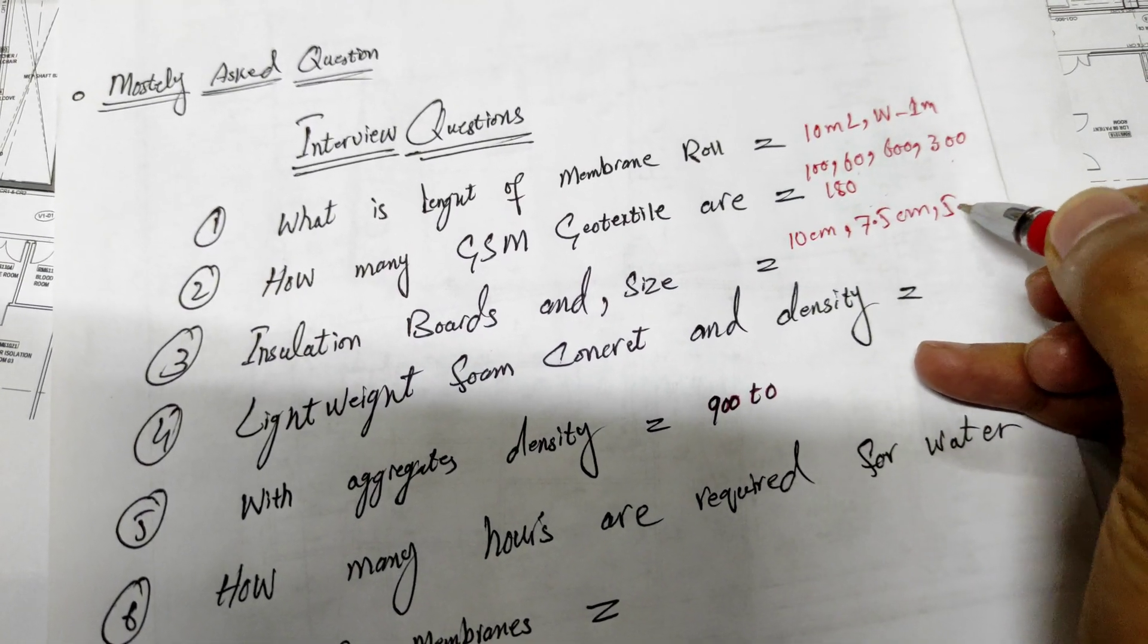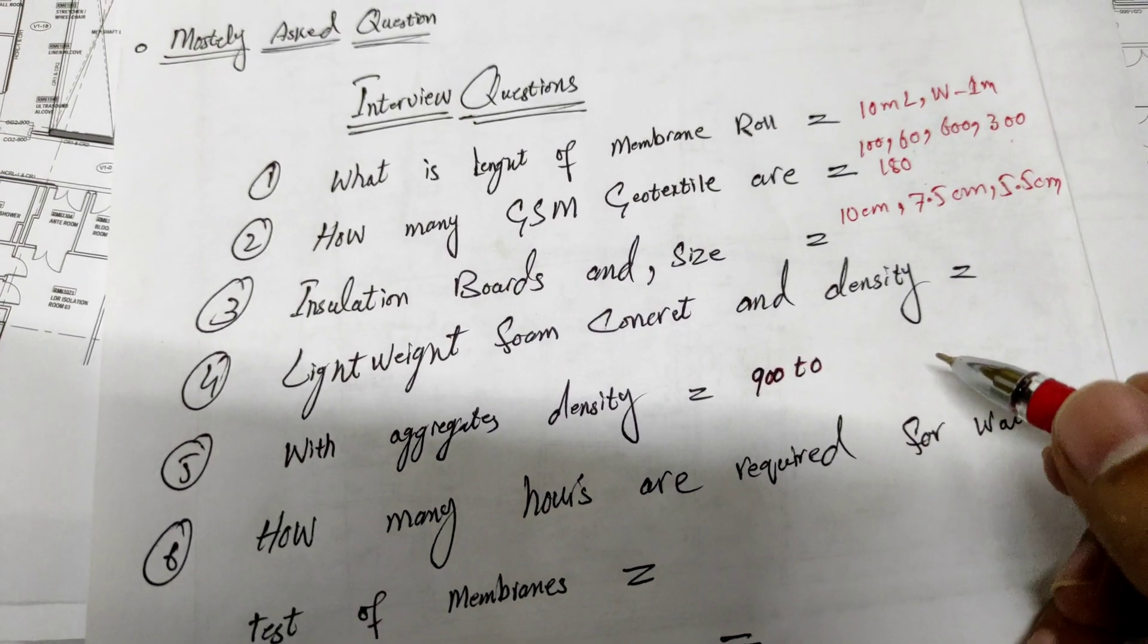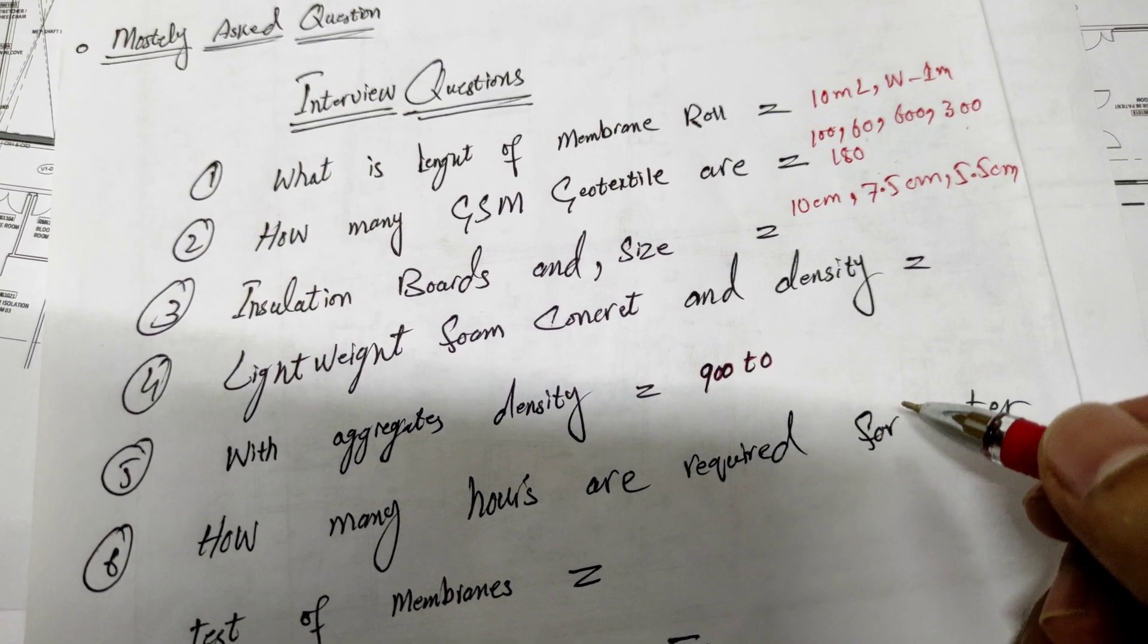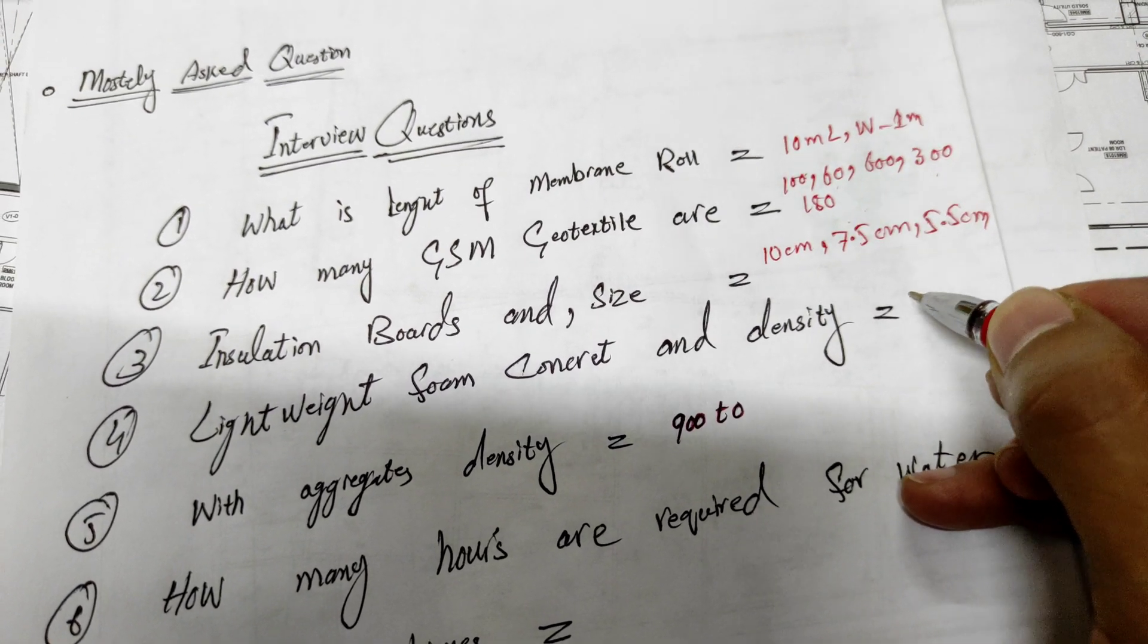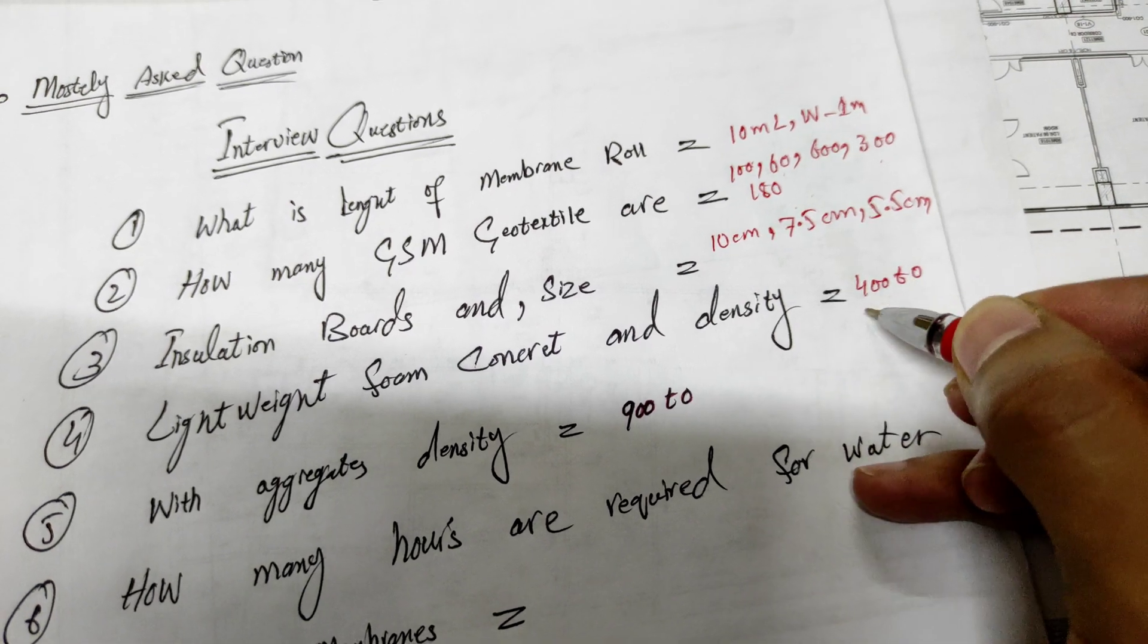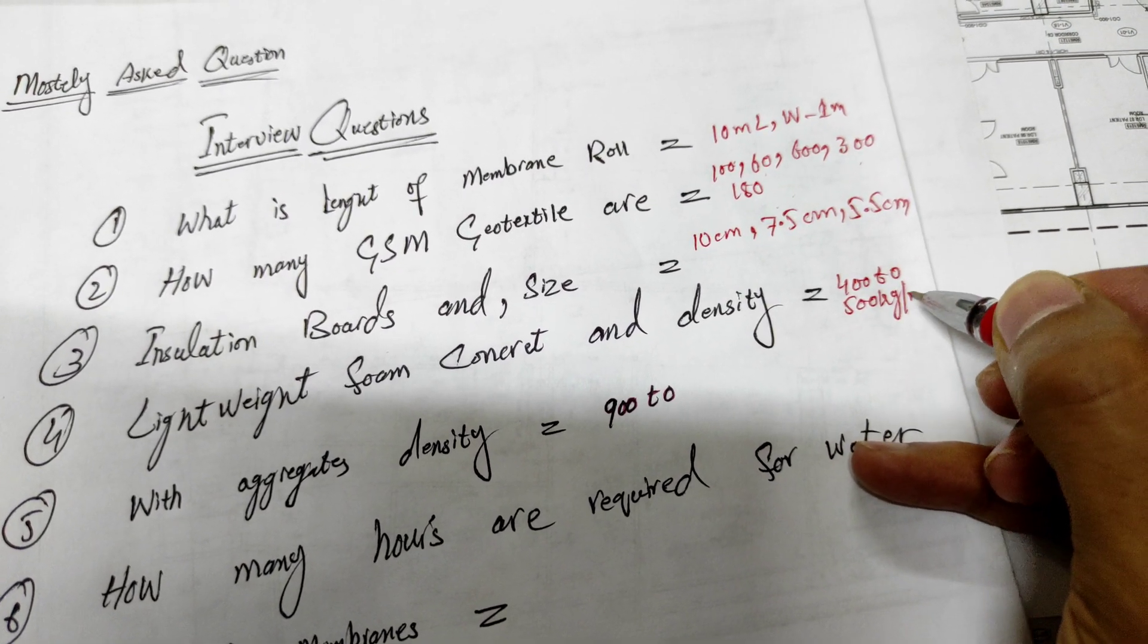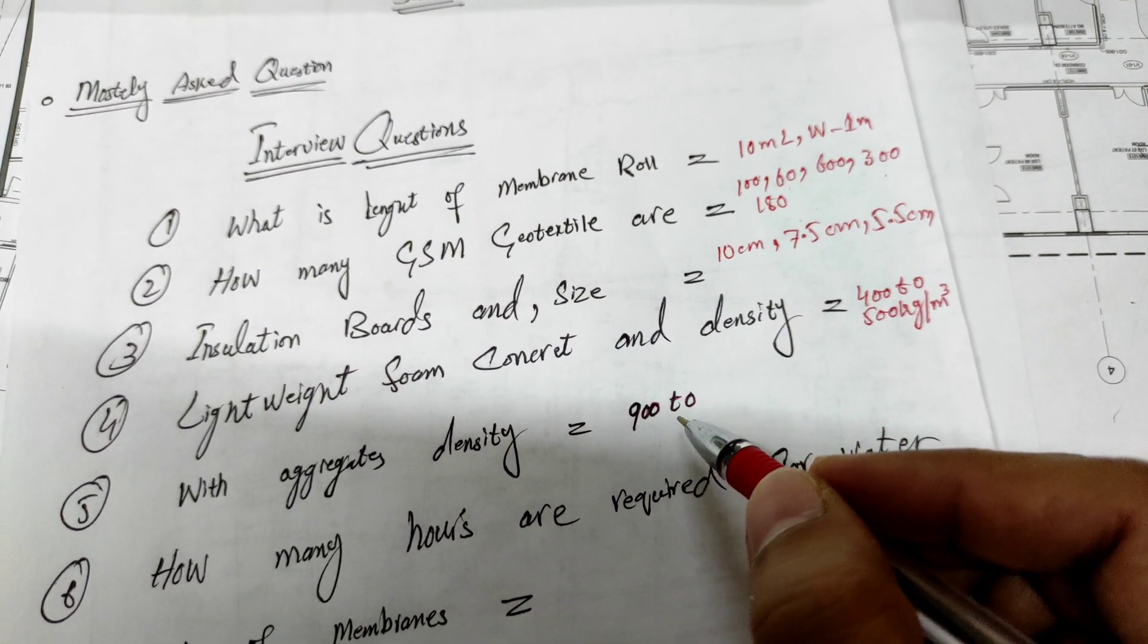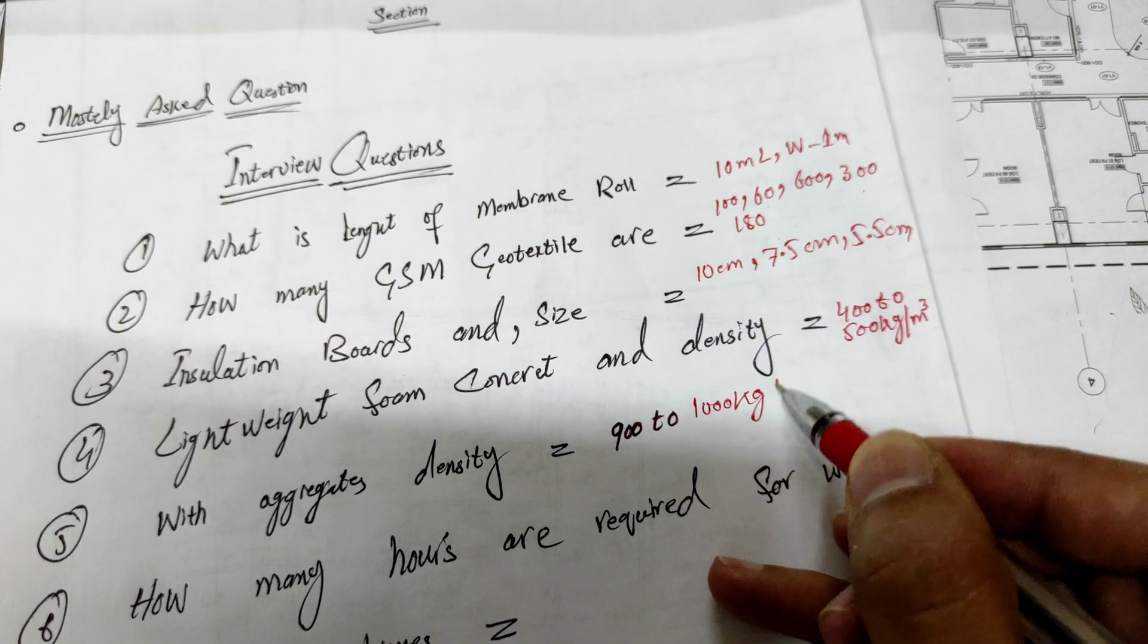Fourth: Lightweight foam concrete and density. Density of lightweight foam concrete is 400 to 500 kg per meter cube, and with aggregates it's 900 to 1000 kg per meter cube.